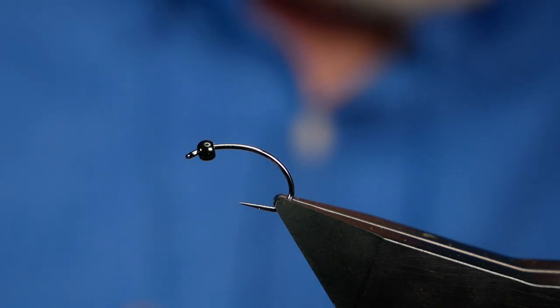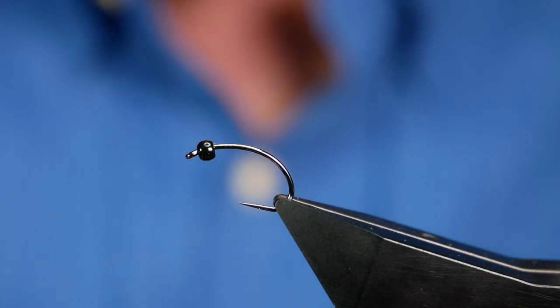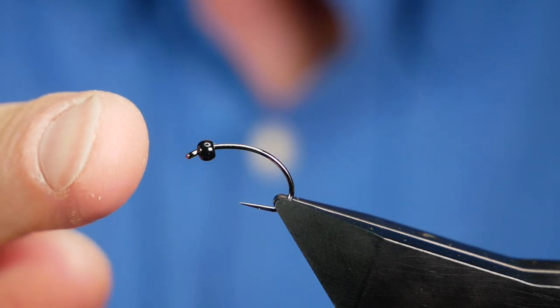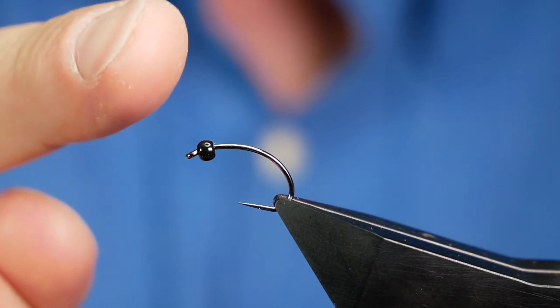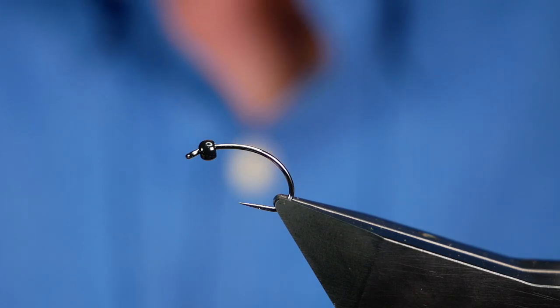Now the other week if you follow the channel you know I fished with Steve Cullen and he was fishing with a size 8 heavy grub hook which was quite a big fly. Now I want to achieve the same weight and sink rate but with a much smaller fly the size 12, so I'm using the tungsten bead to give me that extra weight.